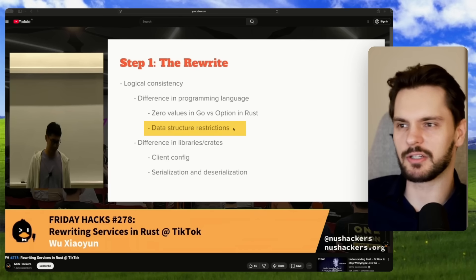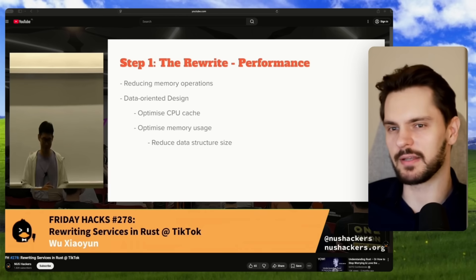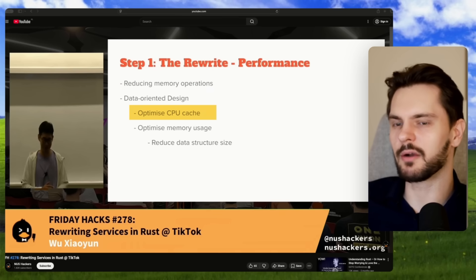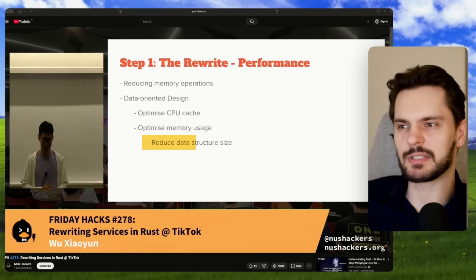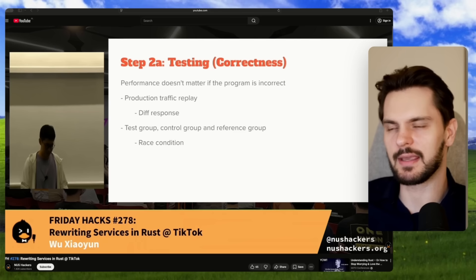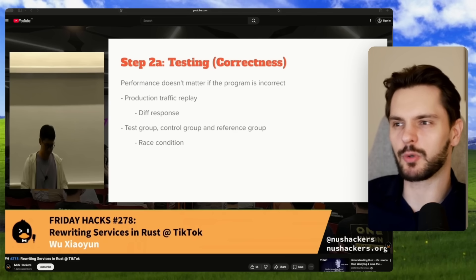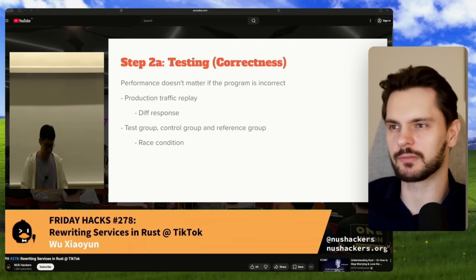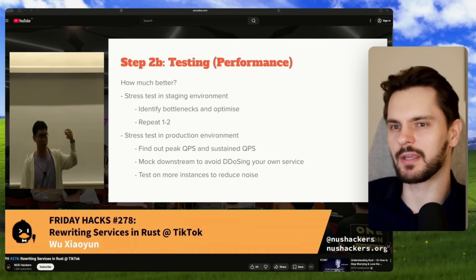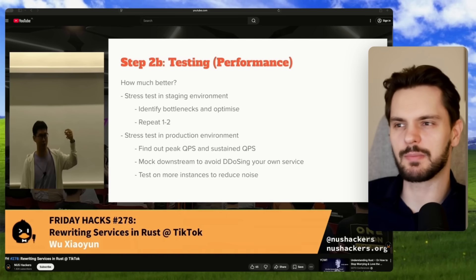He also had to adjust some data structures to fit Rust's strict ownership rules. After making sure the logic was identical, Wu tuned performance by reducing unnecessary memory allocations and optimizing cache usage through data-oriented design, keeping data types small and CPU-friendly. Next, he verified correctness and speed by replaying real production traffic in a staging environment, sending the same requests to the Go and Rust versions and comparing responses. Then came load testing, measuring how much traffic each version could handle and how much CPU it burned.